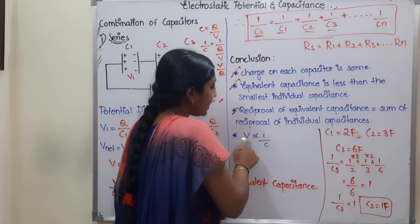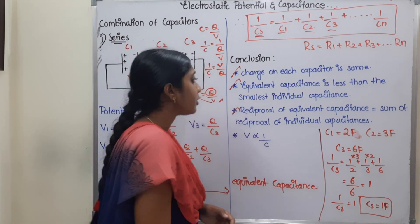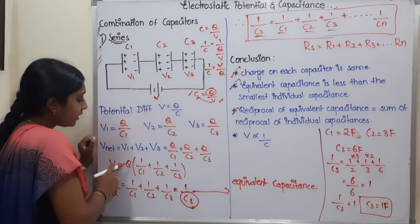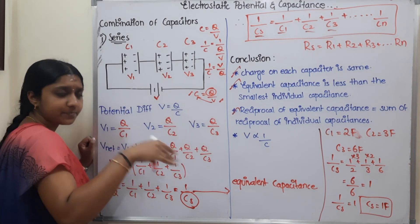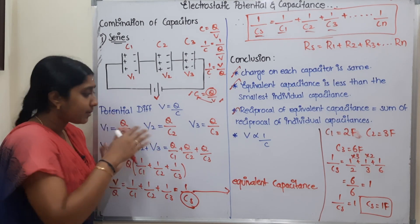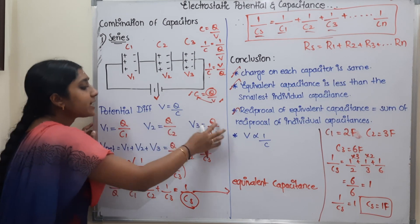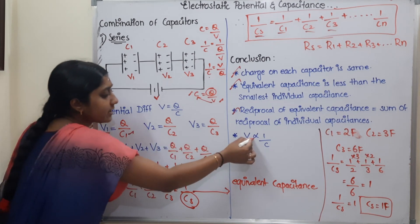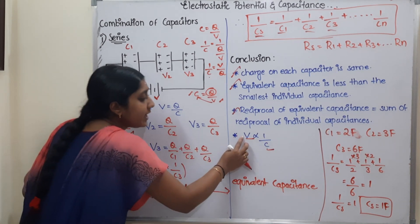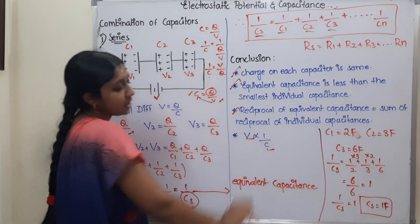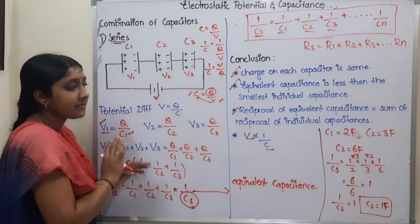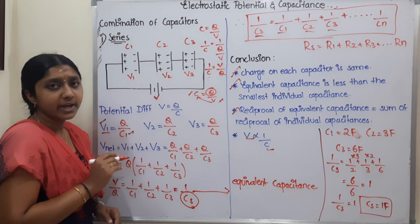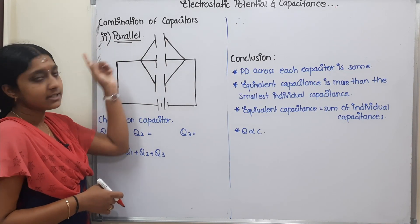Last point for series: V is directly proportional to 1/C. Since charge Q is the same and Q = CV, the capacitor with smaller capacitance has larger potential difference. Now let's quickly look at the combination of capacitors in parallel.